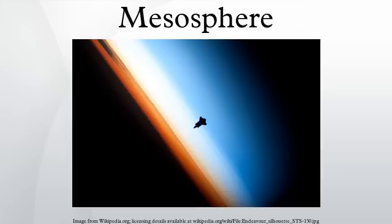Within the mesosphere, temperature decreases with increasing height. This is due to decreasing solar heating and increasing cooling by CO2 radiative emission. The top of the mesosphere, called the mesopause, is the coldest part of Earth's atmosphere.